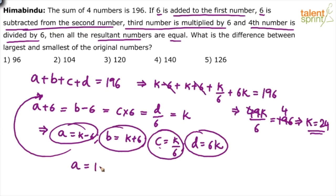A will be equal to 24 minus 6, 18. B will be equal to 24 plus 6, 30. C will be equal to 24 by 6, 4. And D will be equal to 24 into 6, 144. 18, 30, 4 and 144.